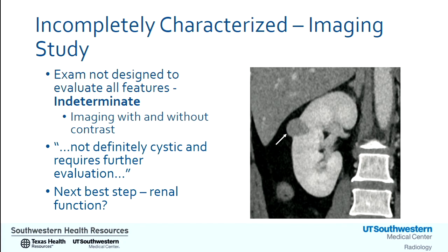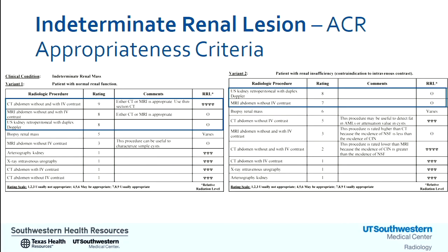When we encounter an indeterminate renal lesion, we may state it is not definitively cystic and requires further evaluation. The next best step depends on the patient's renal function. For indeterminate renal lesions, the ACR Appropriateness Criteria separates imaging recommendations into two groups: one for patients with normal renal function, and another for patients with renal insufficiency where there may be a contraindication to contrast. I'll focus on three main modalities — CT, MRI, and ultrasound — briefly reviewing the pros and cons of each.